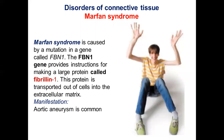Marfan syndrome is a disorder of connective tissue caused by a mutation in the gene FBN1. This gene provides instructions for making a large protein called fibrillin-1, which is transported out of cells into the extracellular matrix. A key clinical manifestation is aortic aneurysm.